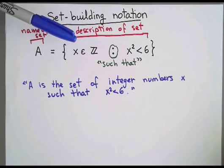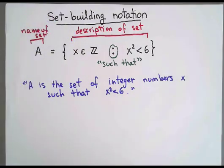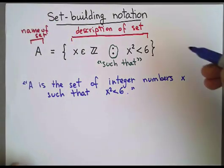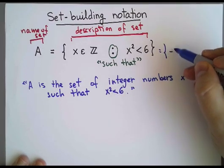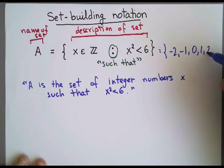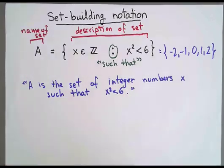And if I put it that way, I actually know what this is exactly. I can describe this. This set has only five elements. It is the set of -2, -1, 0, 1, 2. We can do many more examples. So let's see a few more.